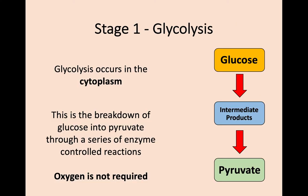So let's start with stage one: glycolysis, which you might remember from National 5. As we said, glycolysis takes place in the cytoplasm. This process breaks down glucose, obtained from the food that you eat, into intermediate products and then into a compound called pyruvate, which is what we're aiming for at the end of this stage. One important thing to note is that oxygen is not required here, so regardless of whether oxygen is available or not, glycolysis will always take place.